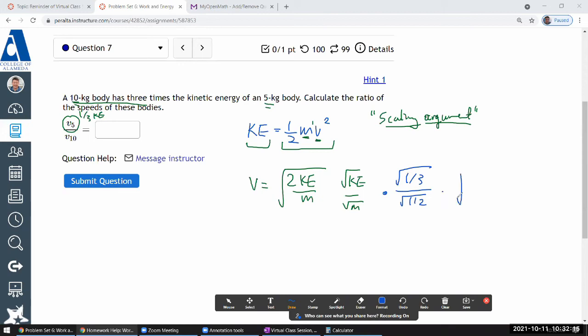So combining them, I get 2 over 3 square root of it. So if I'm asked, how does the velocity of the 5 kg mass differ as a ratio or a fraction of the velocity of the 10 kg mass, I can say that it's whatever the 10 kg mass's velocity is times this quantity. So let me give that a try.